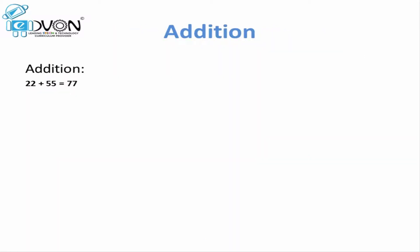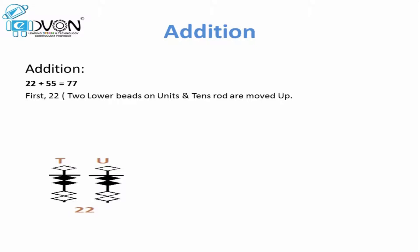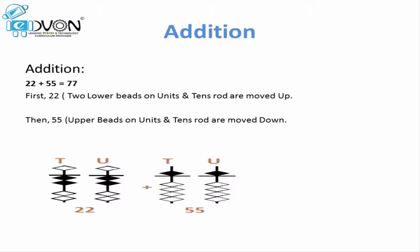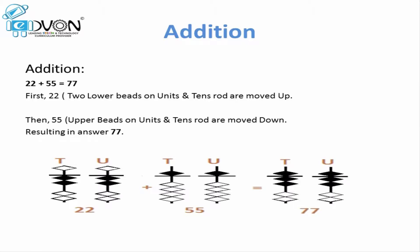After learning how to place similar values on abacus, let's learn how to add similar values while using abacus. For example, if we want to add 22 and 55 together. First, we will place 22 — two lower beats moved up to touch the calculation bar on tens rod and units rod. Now to add 55, we move the upper beat down on tens rod and units rod. As a result, we get upper beat and two lower beats touching the calculation bar on tens rod and units rod. This represents the value 77, so our answer would be 77.